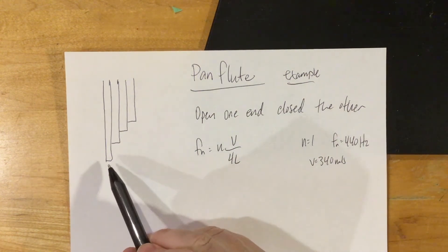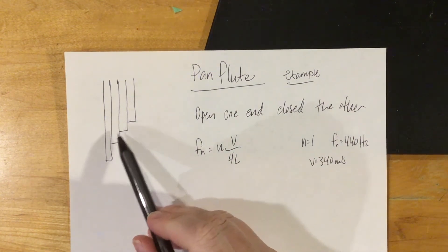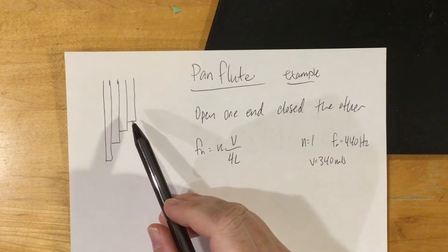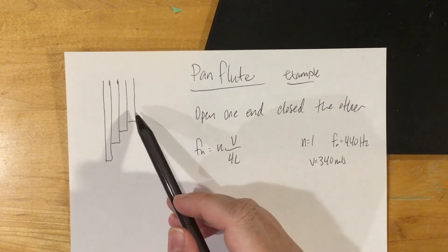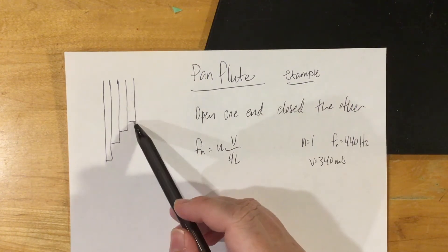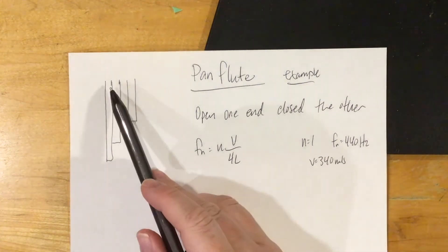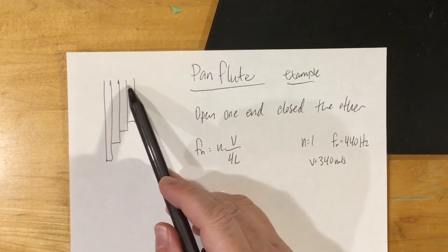For your pan flute, you'll have four different straws that you'll calculate. Depending on what your lengths end up being, you could maybe get away with using two straws or even less. You'll tape the bottom end and leave the top end that you'll blow across open.